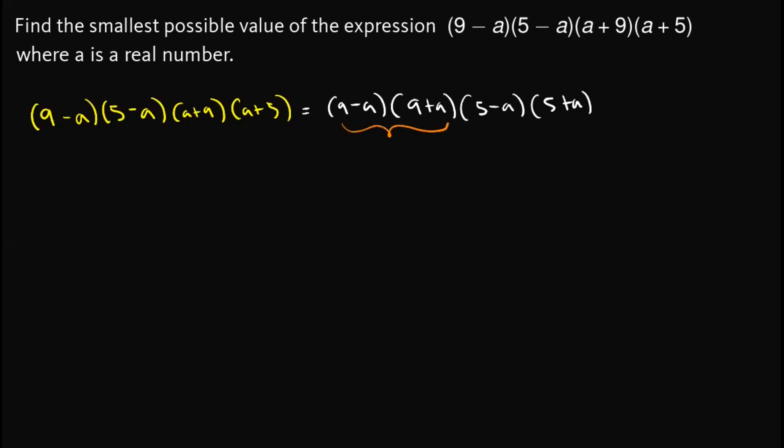the difference of two squares. So this would become 9 squared minus a squared times 5 squared minus a squared, or 81 minus a squared times 25 minus a squared.